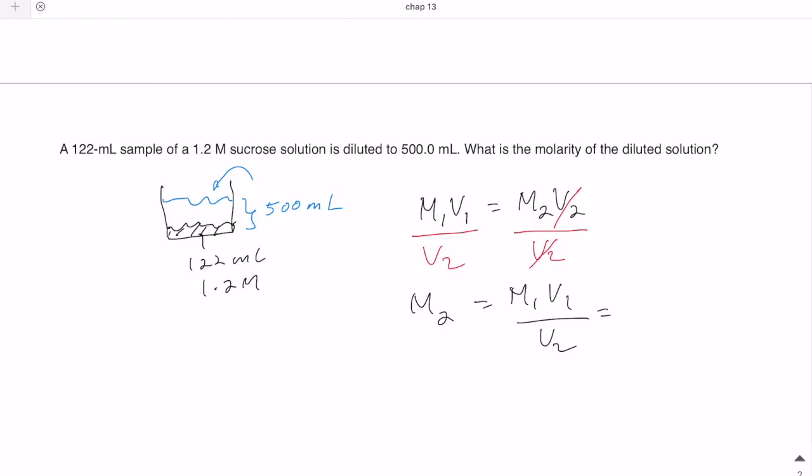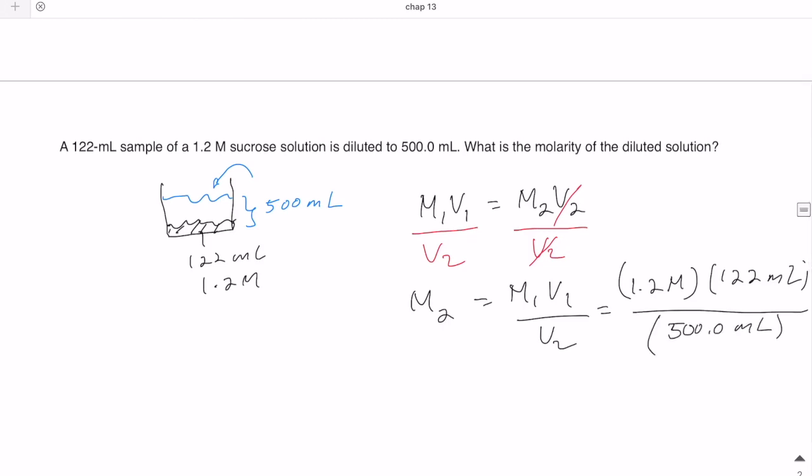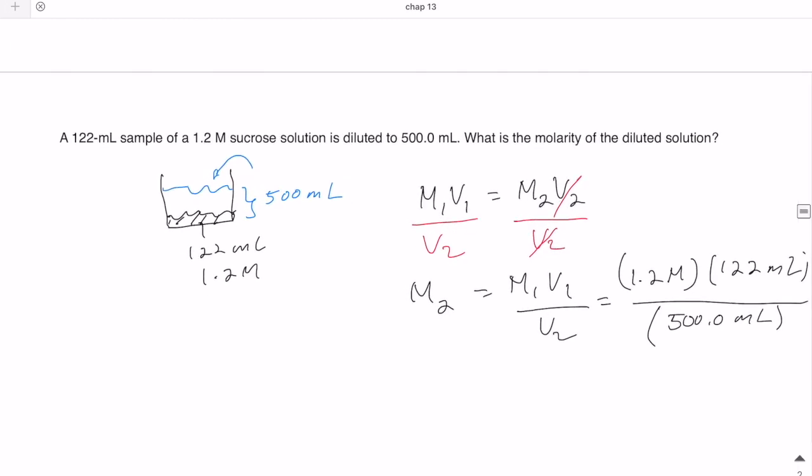All we need to do is put in our values: M1 is 1.2 molar, V1 is 122 milliliters, and V2 is 500 milliliters. In some cases, students like to change the volume to liters. In this case, it's not necessary because the units will cancel out. Whether you change it to liters or keep it in milliliters, it still cancels out. The concern is when you change it to liters, sometimes people make conversion mistakes.